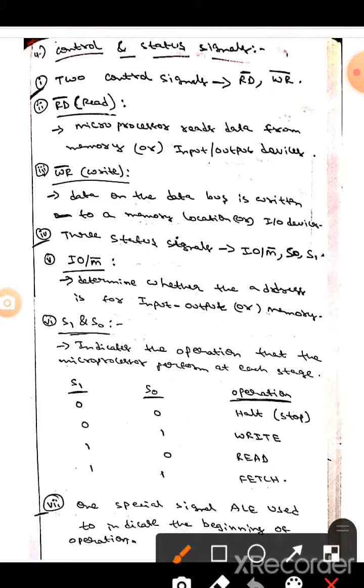Whereas the next one is WR bar. It means write. Here data on the data bus is written to a memory location or input output devices.